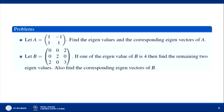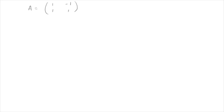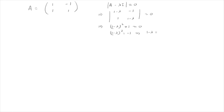Let us discuss the first problem. Consider matrix A = [[1, −1], [1, 1]]. We find its eigenvalues and corresponding eigenvectors. Setting det(A − λI) = 0, we get det([[1−λ, −1], [1, 1−λ]]) = 0, which implies (1−λ)² + 1 = 0. So (1−λ)² = −1, giving 1−λ = ±i, thus λ = 1 ± i. The two eigenvalues are 1+i and 1−i.